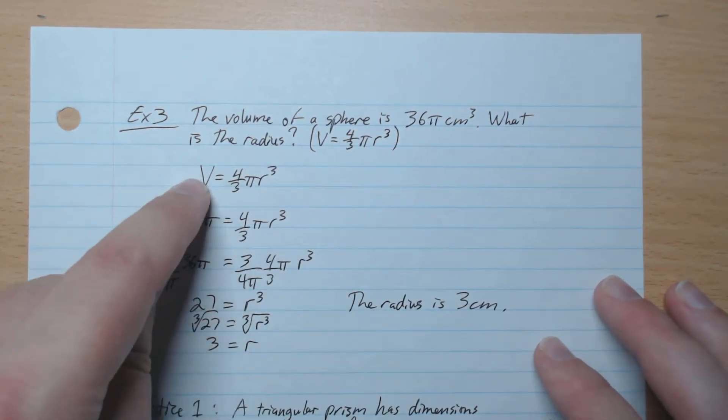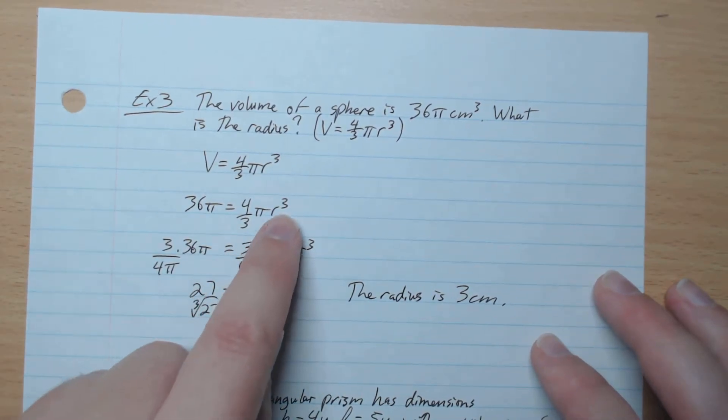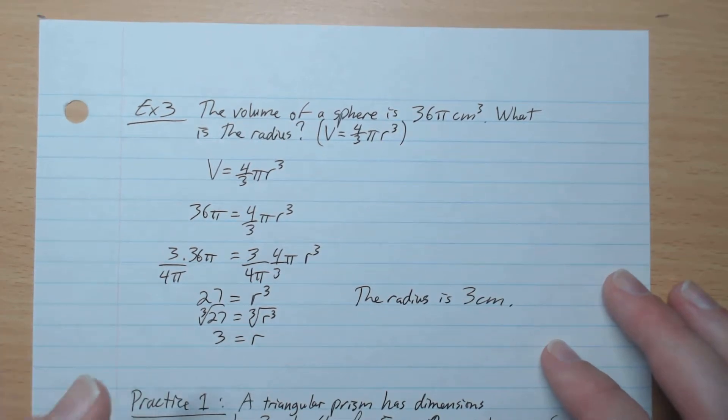so we have that here. V is 36π, so we plug that in. Now we want r on its own. So this comes in handy if you've completed the fraction videos.